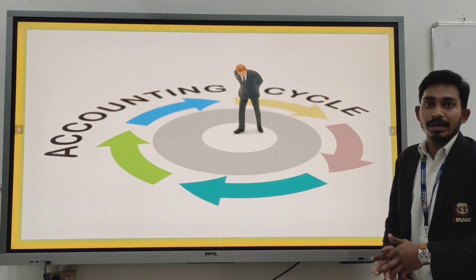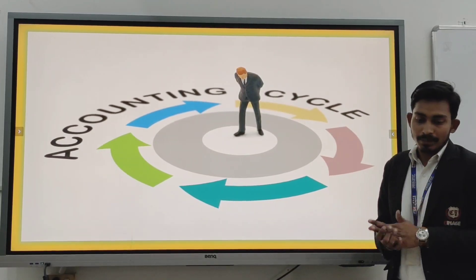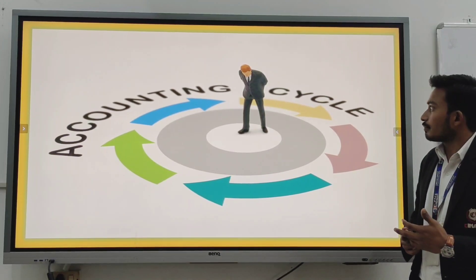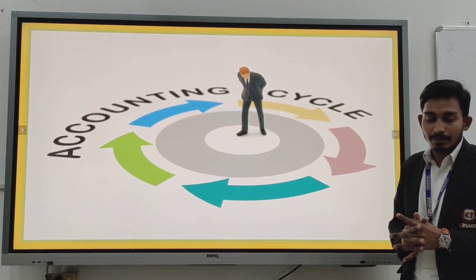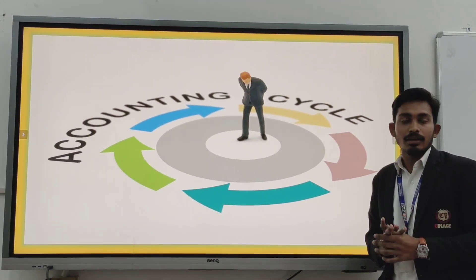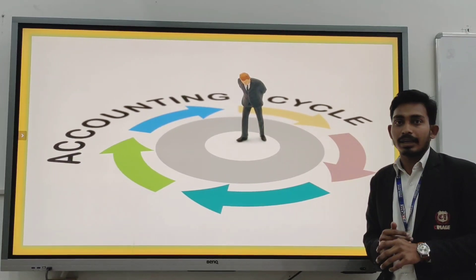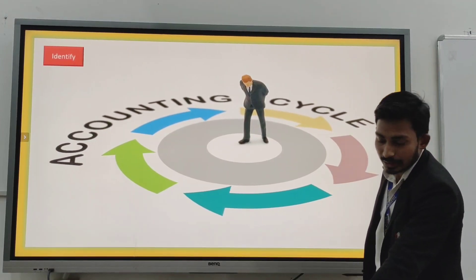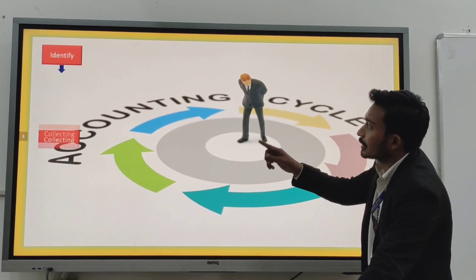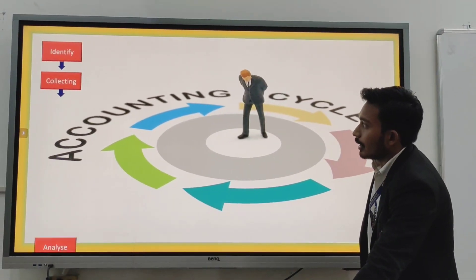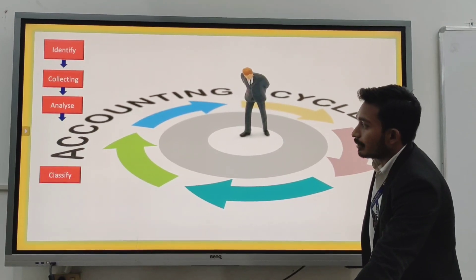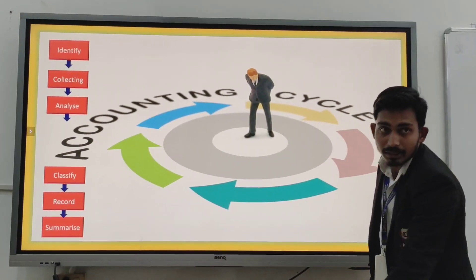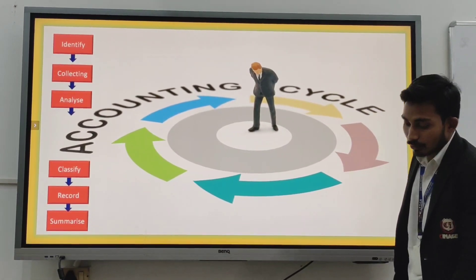The accounting cycle is a step-by-step process of any business transaction of a particular financial year. First of all, we identify and classify the transactions, we collect them, and then we summarize them. This is the process for which the accounting cycle works.